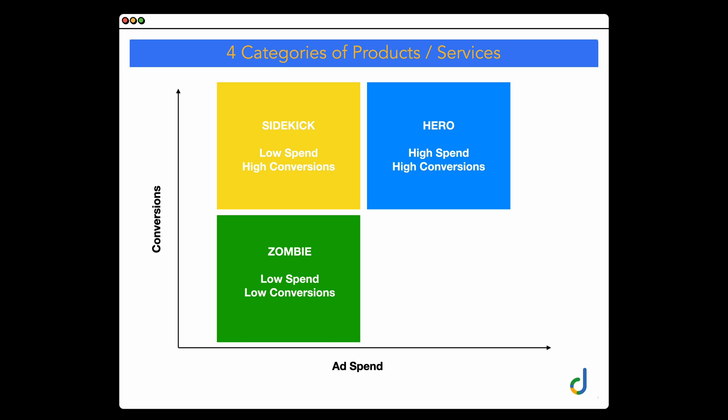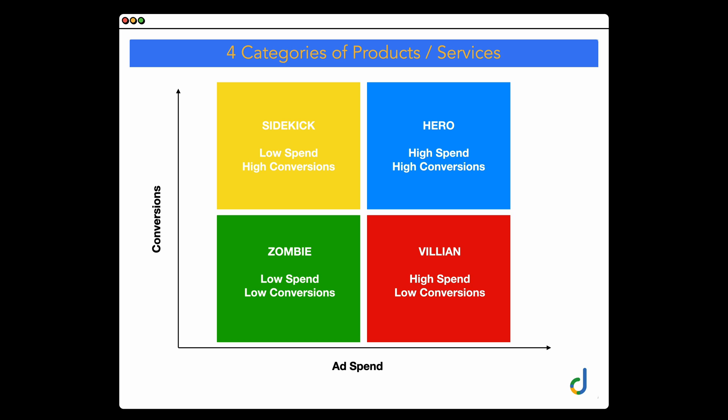By breaking zombie products or services out into their own campaign, we've got control of the budget at the campaign level, so we're forcing Google to spend money on these products. What we're really doing with zombie products or services is we want to find out: are these going to be sidekick products, or are they going to be hero products, or are they going to be this fourth category of products — the villain products — which you want to avoid?